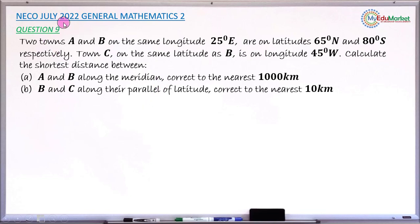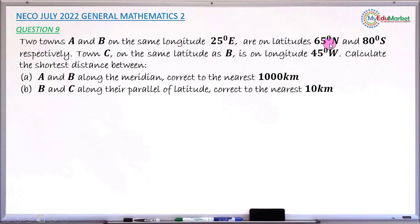This is NECO July 2022 General Mathematics Paper 2, and we are answering question number nine. Two towns A and B are on the same longitude, 25 degrees east. Town A is on latitude 65 degrees north and town B is on latitude 80 degrees south. Another town C is on the same latitude as town B.